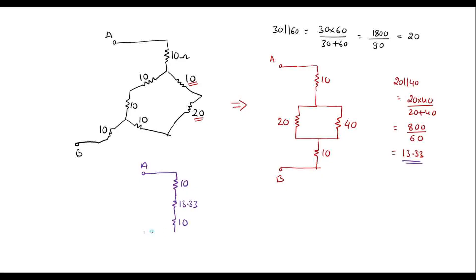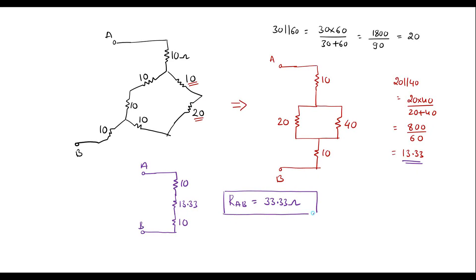This 13.33 and this 10 are in series, connected to node B. So the final resistance between A and B — all three are in series — that is 10 plus 13.33 plus 10, which equals 33.33 ohms. So this is the equivalent resistance between terminal A and B, that is 33.33 ohms. Thank you for watching.